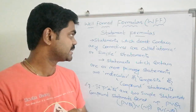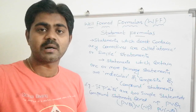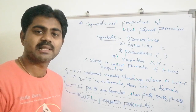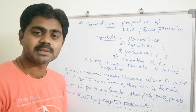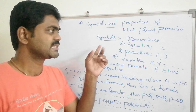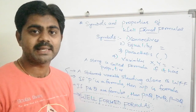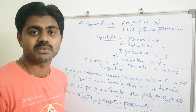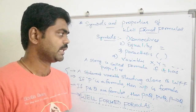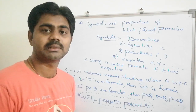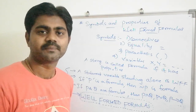Once you understand simple and compound statements, it's easier to understand well formed formulas. Let's look at the symbols and properties of WFF. The symbols used are: connectives (negation, and, or, implies, biconditional), equality (e.g., P equals Q), parentheses (open and closed braces), and variables such as X, Y, Z, and so on.